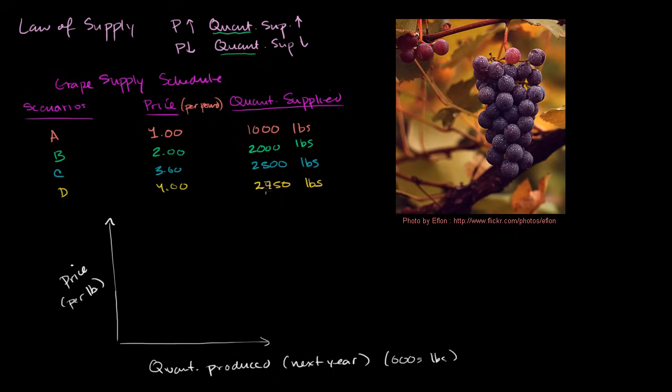And so let's see. We go all the way from 1,000 to close to 3,000. So let's say this is 1,000. That's 1 for 1,000. That's 2,000. And that is 3,000. And then the price goes all the way up to 4. So it's 1, 2, 3, and then 4. So we can just plot these points. These are specific points on the supply curve. At $1, we would supply 1,000 pounds. That's scenario A. At $2, we would supply 2,000 pounds. That's scenario B.